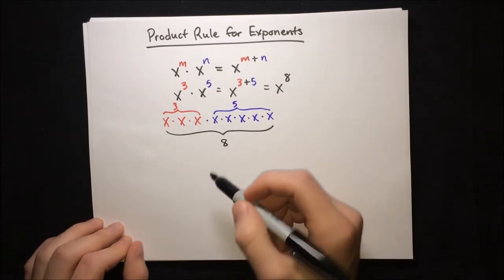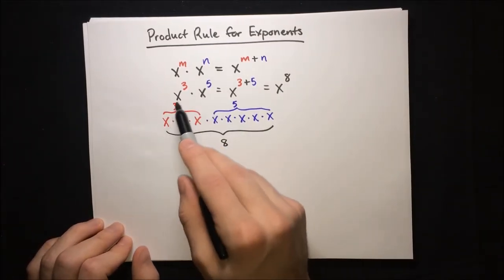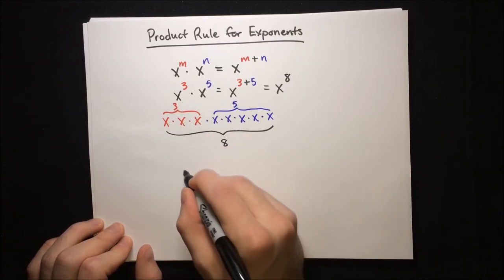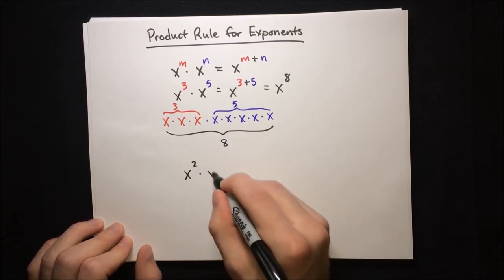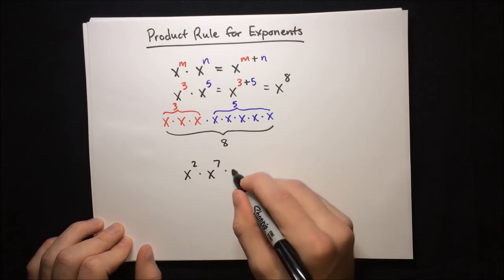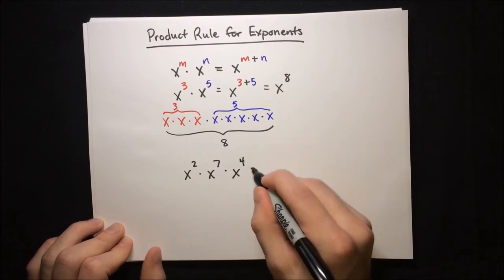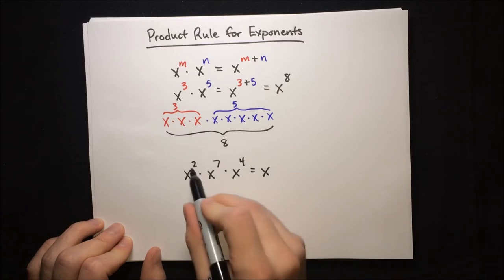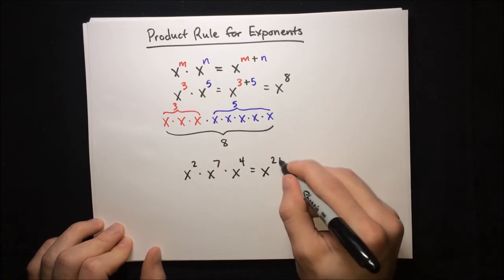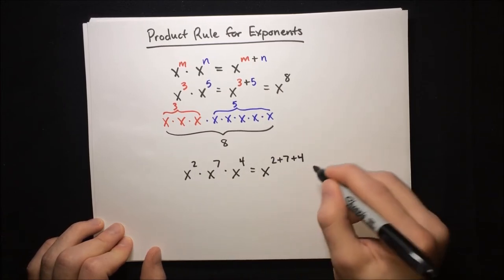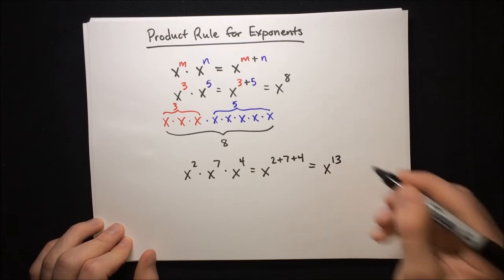You can also extend this to multiple products in a row. So if you have x squared times x to the seventh times x to the fourth, then that's just x to the sum of all the exponents, two plus seven plus four. And that's just x to the thirteenth.